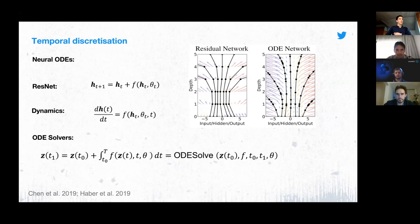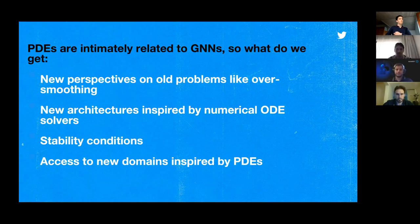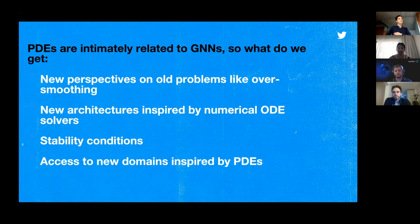That covers temporal discretization. PDEs are intimately connected to GNNs, and this gives us new perspectives on problems like oversmoothing, bottleneck, and oversquashing. It also gives new architectures inspired by numerical ODE solvers — people have spent a couple of hundred years worrying about the stability of PDEs, and all of that stability mathematics applies directly to GNNs. We also get access to new domains: for instance, we have work currently under review that looks at Ricci flow.